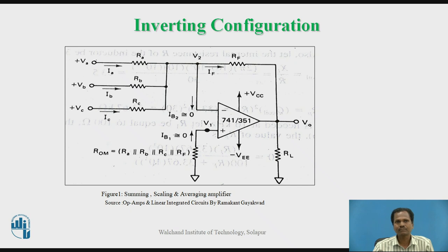Let us go to the inverting circuit configuration of operational amplifier. The figure shows the circuit diagram for an inverting amplifier with multiple input voltages. V-A, V-B and V-C are input voltages applied to the inverting input of the operational amplifier through resistors R-A, R-B and R-C. Currents resulting due to V-A, V-B and V-C are I-A, I-B and I-C respectively towards node V-2. The non-inverting input is connected to ground through resistor R-OM.